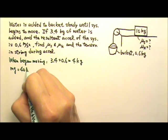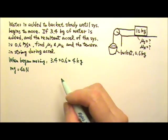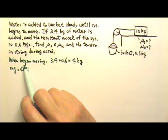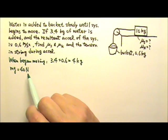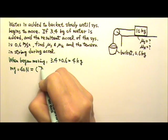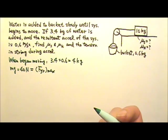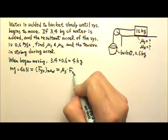That means the mg, 40 N, would be pulling on the 10 kg. And that means if the system begins to move, this 40 N is just enough to overcome that maximum possible friction, which is μs times the normal force.